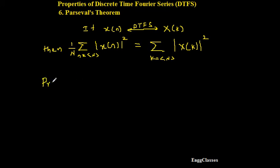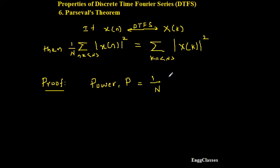Now let me consider the proof. If I look closely, the LHS — the left-hand side of this expression — is nothing but the average power. We have considered this in the earlier videos of signals and systems. So this is nothing but the average power of periodic discrete time signal x of n. Therefore, power P is equal to 1 over N, summation n over the range capital N, magnitude of x of n square. I would prove this equal to the RHS, that is summation k over the range N, magnitude of x of k square.